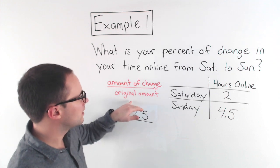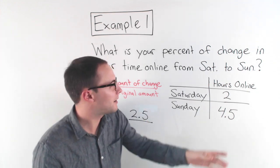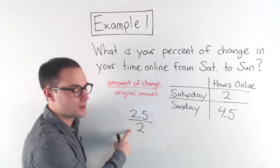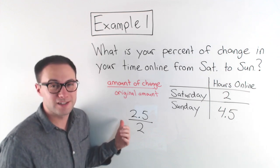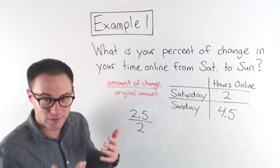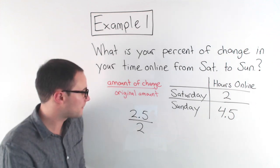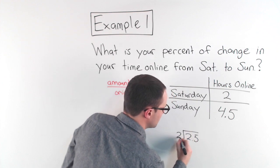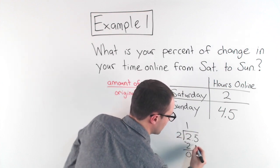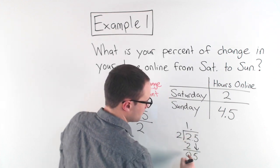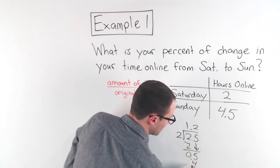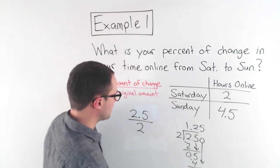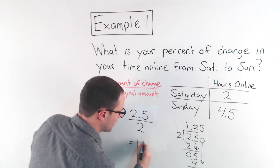In the denominator, the original amount is Saturday — where we started. So we have 2.5 over 2. This doesn't look like a percent, so let's do the division: 2.5 divided by 2. That goes in once, bring down the five, two into five is two with remainder one, two into ten is five. So I get 1.25.